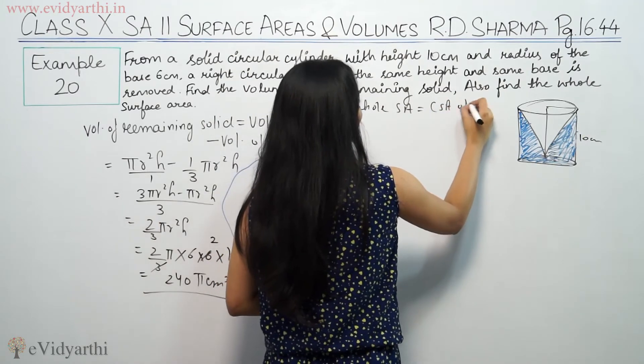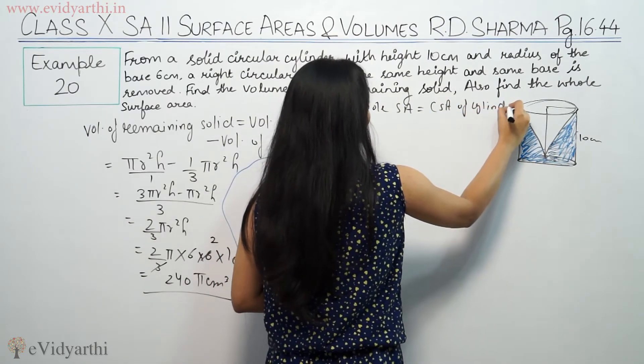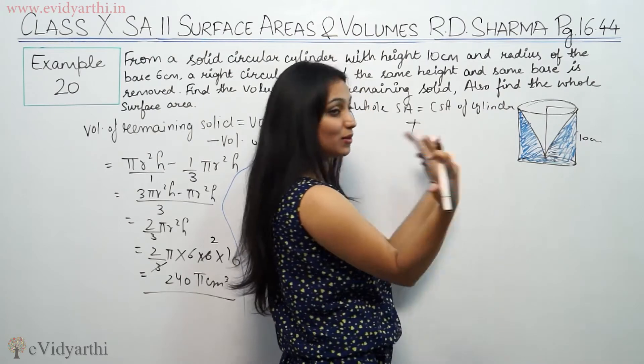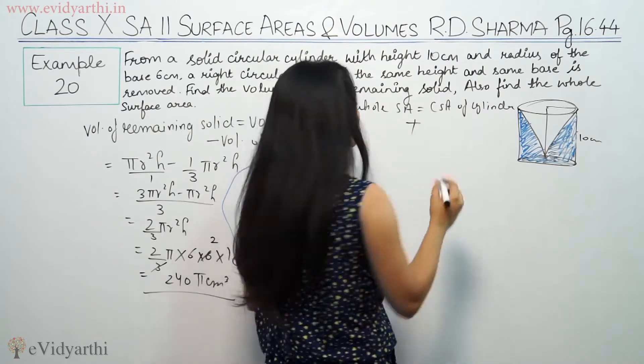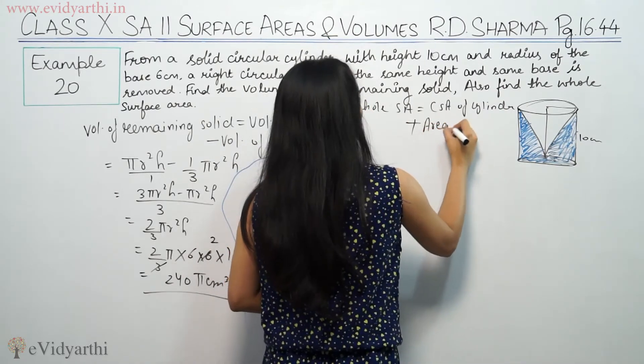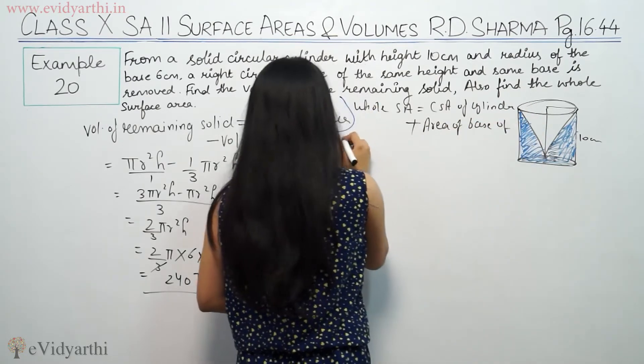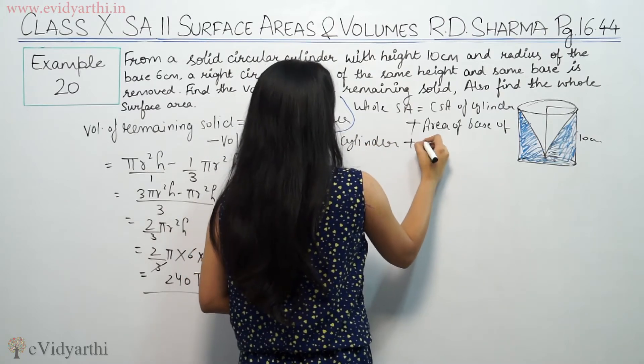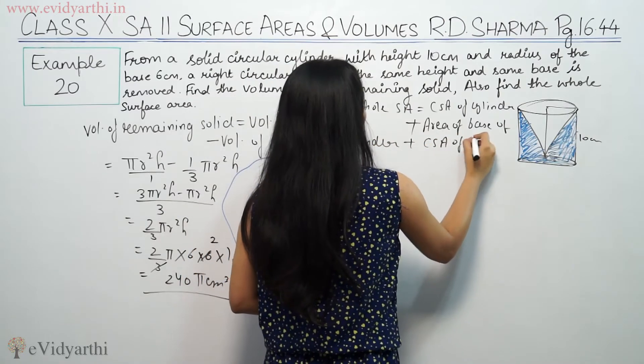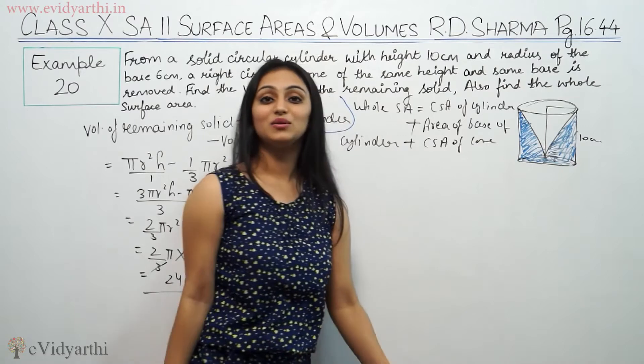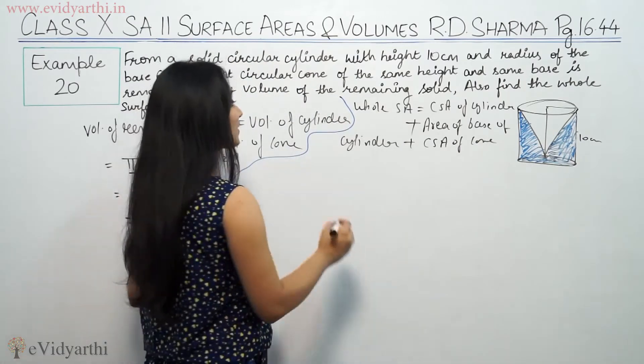Curved surface area of cylinder means only the outer surface, not base or top. Then we take area of base of cylinder, because the cylinder base is included. And then we add curved surface area of cone.